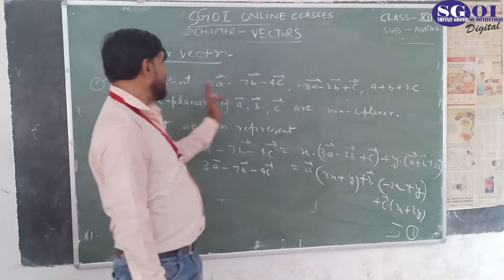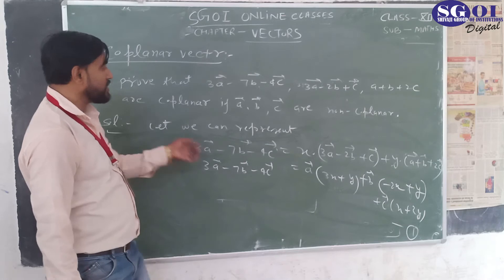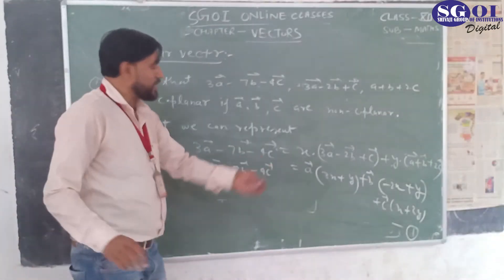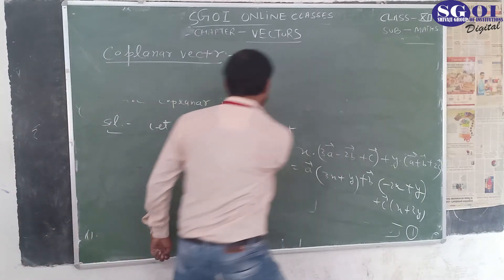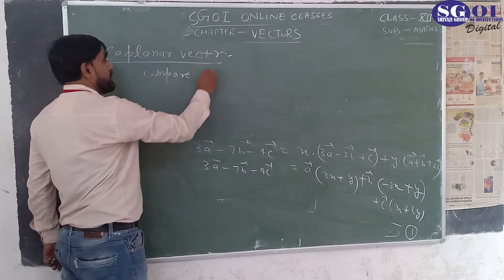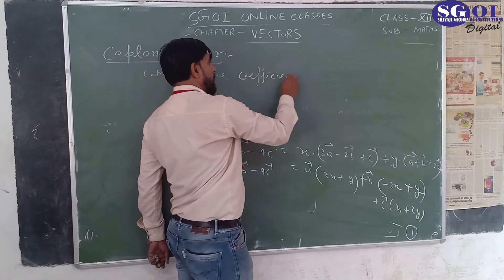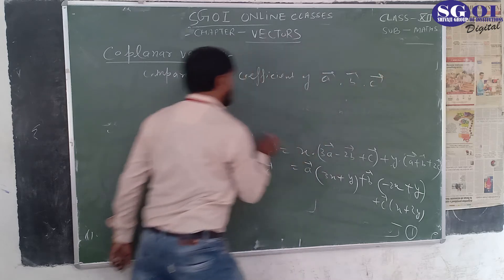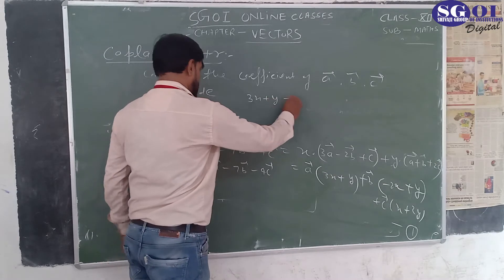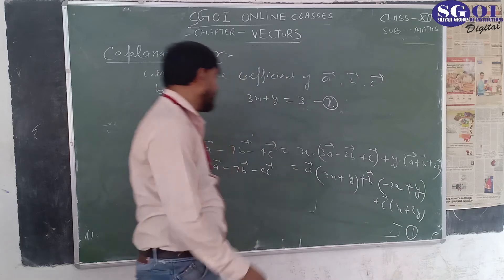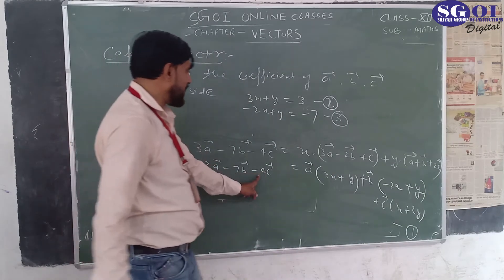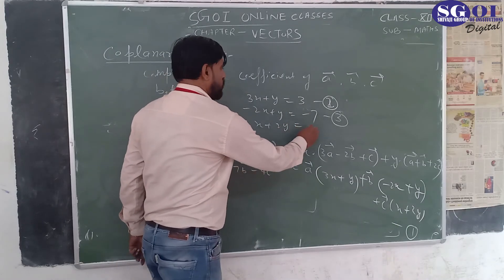We compare the coefficients of A, B, and C on both sides. The coefficient of A gives equation 1: 3x plus y equals 3. The coefficient of B gives equation 2: minus 2x plus y equals minus 7. The coefficient of C gives equation 3: x plus 2y equals minus 4.